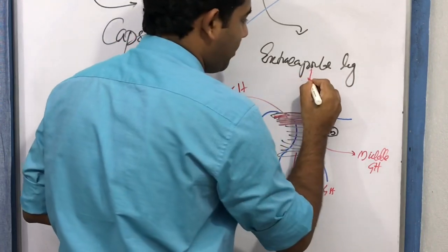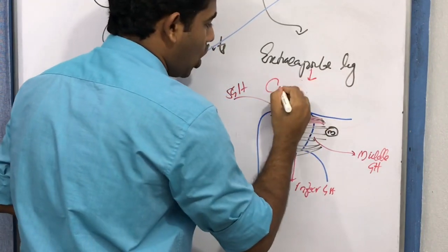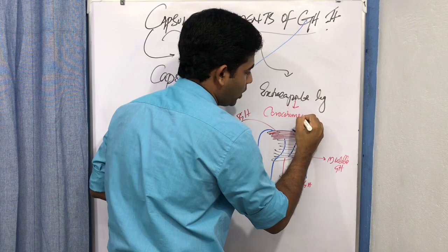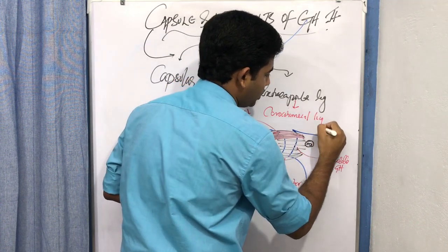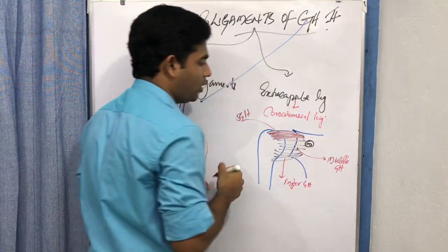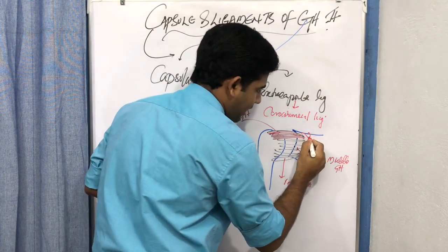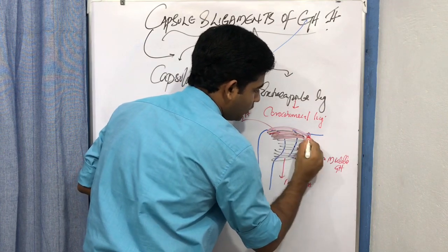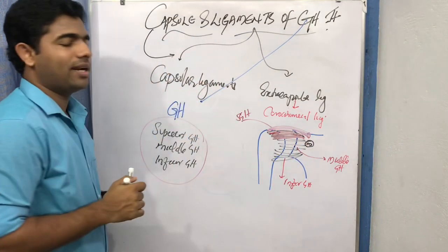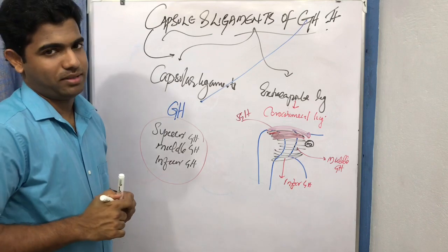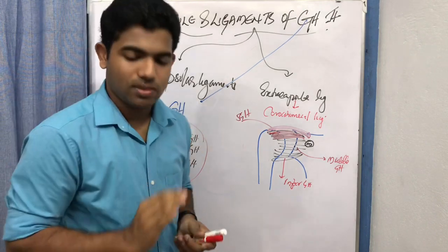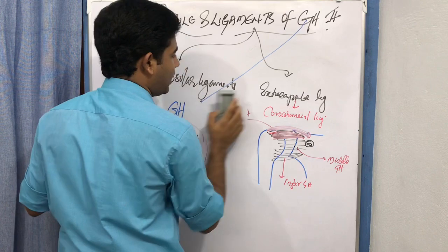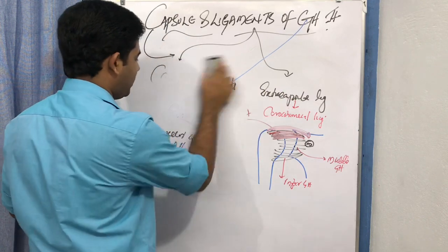The extracapsular ligament is known as the coracohumeral ligament. The coracoid process connects to the humerus, giving this ligament its name.